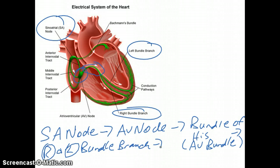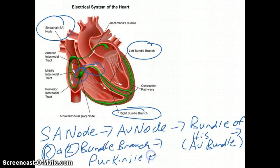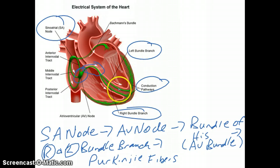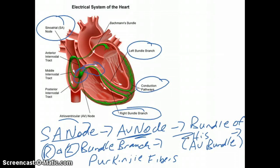From the right and left bundle branch, the signal travels to the Purkinje fibers — labeled here as the conduction pathways. To recap: it starts at the SA node, goes to the AV node, then to the bundle of His or AV bundle, then to the right and left bundle branch, and finally to the Purkinje fibers. That is the electrical system, or conduction system, of the heart.